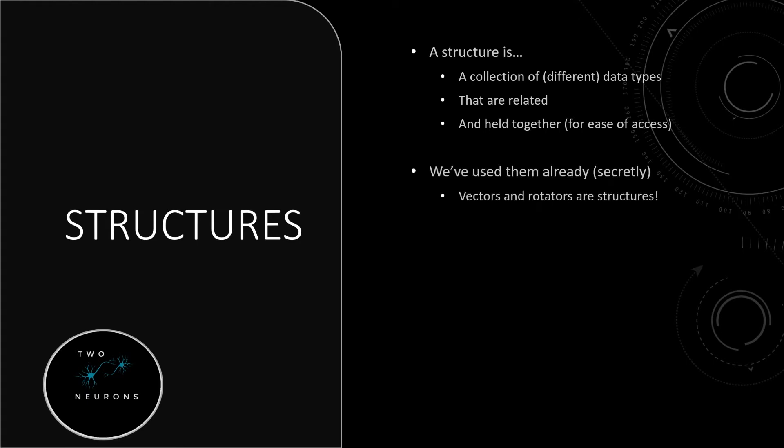We've already used structures. Vectors and rotators are actually FVector and FRotator. F, by the way, stands for structure - F is the identifier for a structure in UE4's C++. So an FVector and FRotator are structures of three floats. Each has three floats in them, so we have already used them.